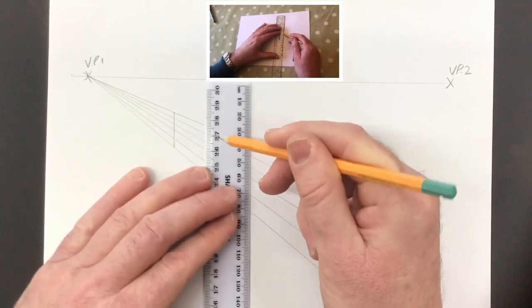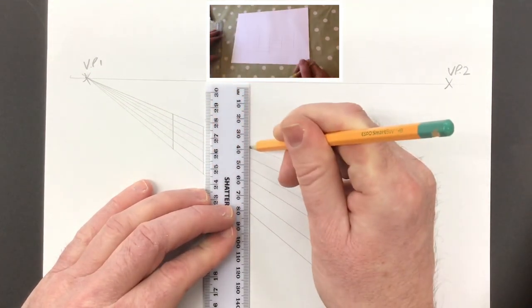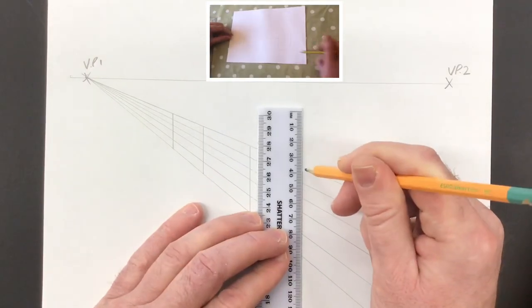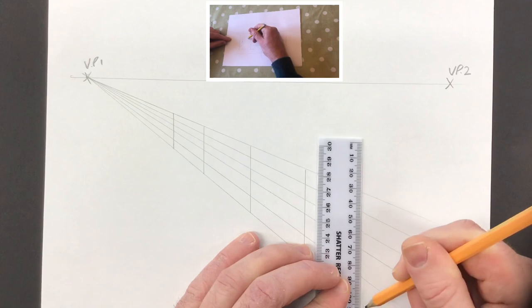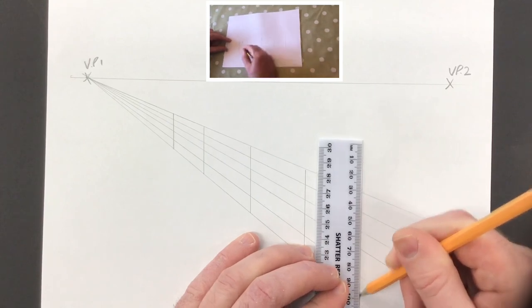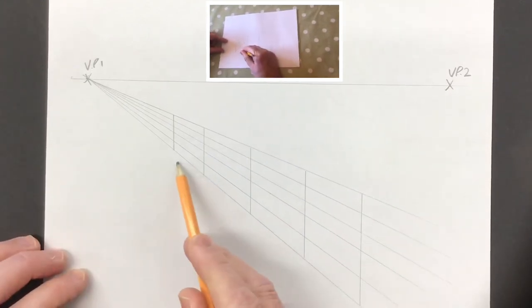Remember, these sections that are furthest away will be smaller because the illusion is that as things get further away they get smaller. Then you should have your grid with sections where you can add your numbers.